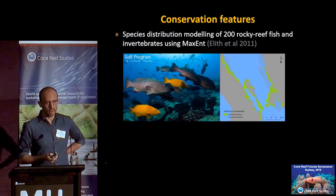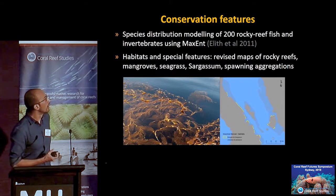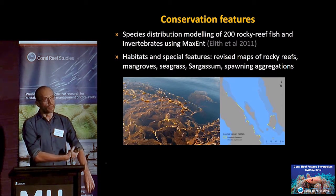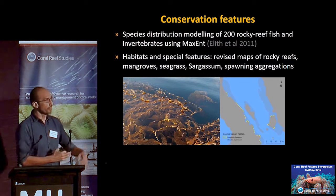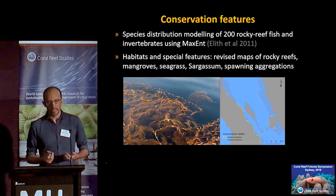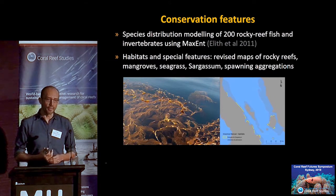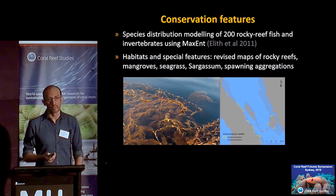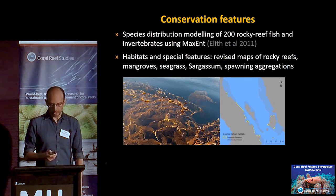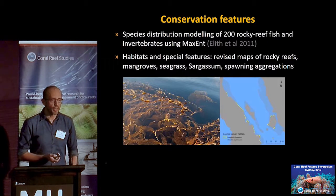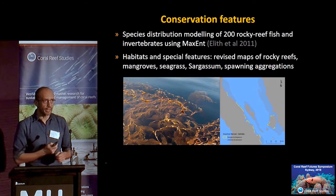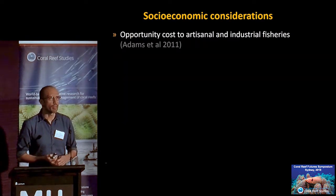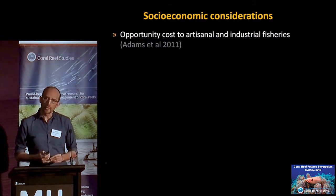We also did a lot of work mapping habitat — all the rocky reef habitats that species use at different stages of their life — and worked with fishers to improve the mapping of these areas. For socioeconomic considerations, we looked at opportunity costs to artisanal and industrial fisheries, with information about 21 or 22 different types of fisheries.